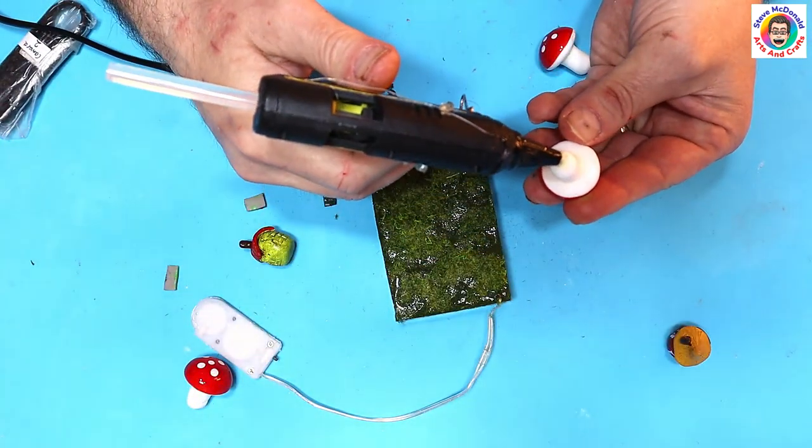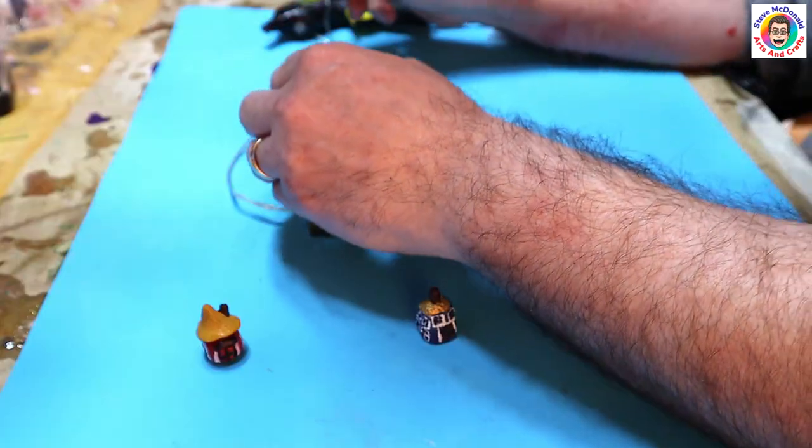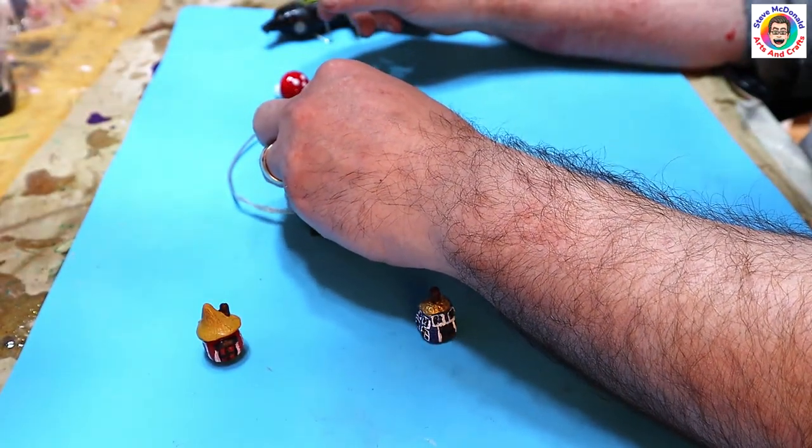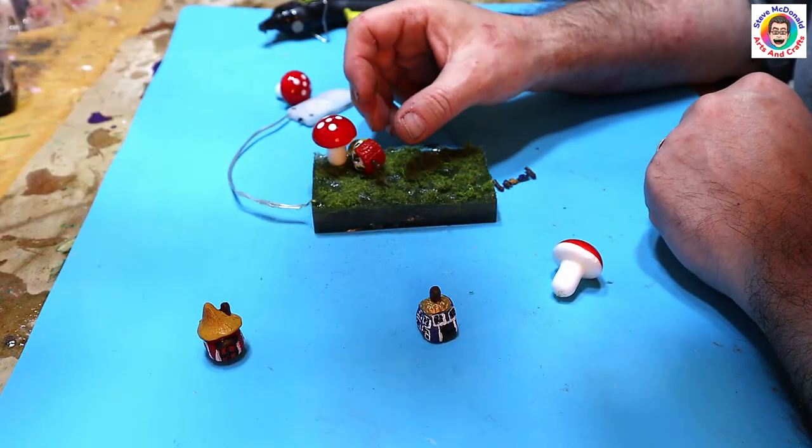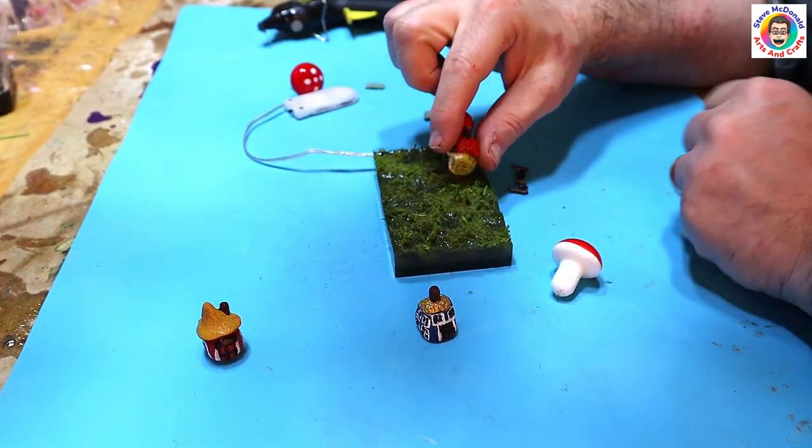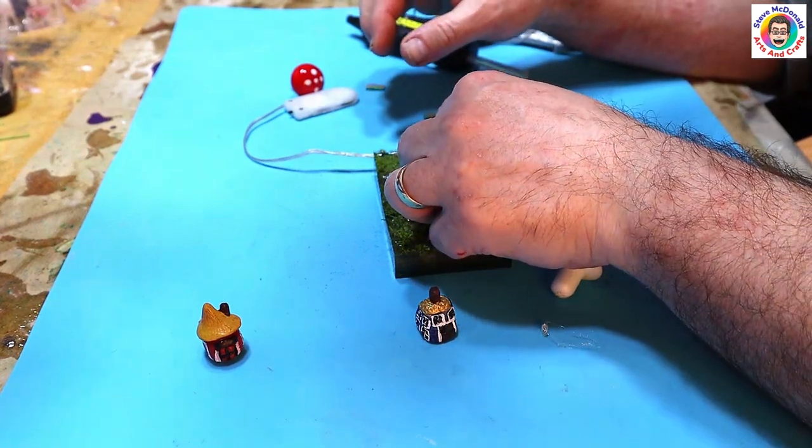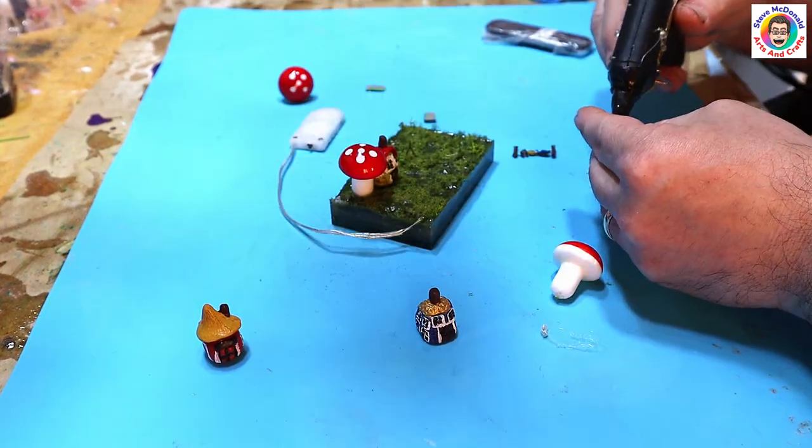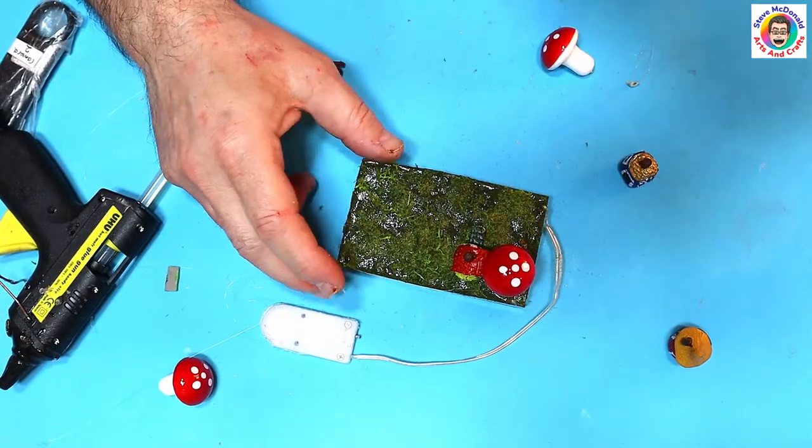All I'm going to do now my glue is hot is stick some glue on the bottom of my mushroom and then I'm going to stick that down where I want it. Then I'm going to have a little house beside it, as if it's part and parcel of that mushroom. Use the good old hot glue gun to stick that down. Pop his little path on. I am loving this. It's so cute.